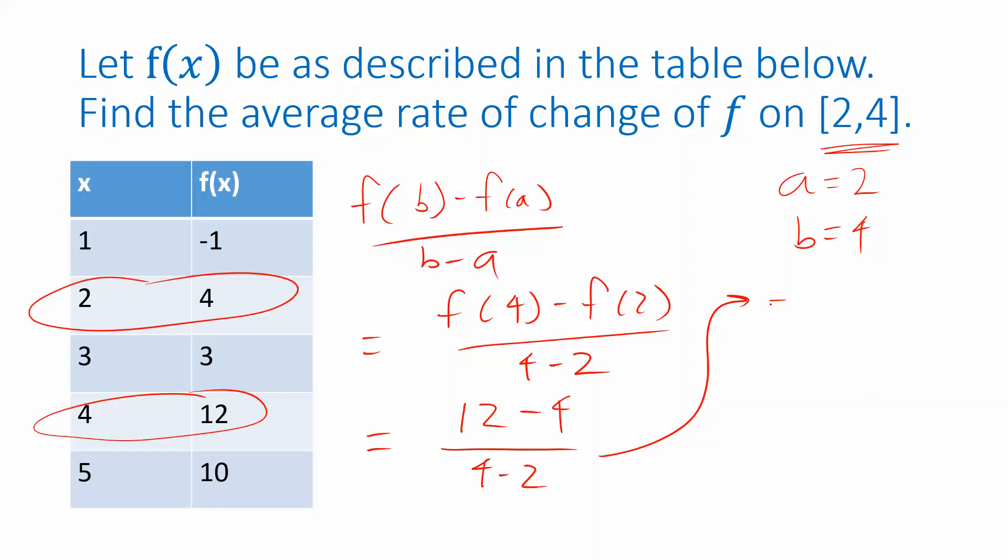Now let's simplify the numerator. We can simplify with subtracting 12 minus four to get eight, and the denominator we can simplify by subtracting four minus two to get two. So our fraction is eight over two, which simplifies to four.